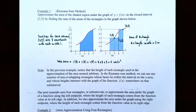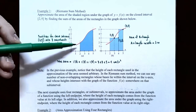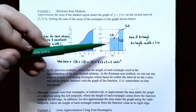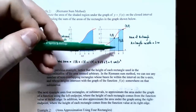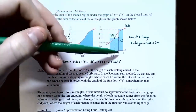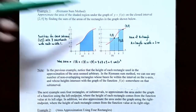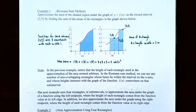Example 1 — the Riemann sum method: approximate the area of the shaded region under the graph y equals f of x on the closed interval 2 to 5 by finding the sum of the areas of the rectangles shown. We're going to use three rectangles: the first from x equals 2 to x equals 3, the second from x equals 3 to x equals 4, and the last from x equals 4 to x equals 5. The first rectangle has a height of 3, the second also has a height of 3, and the last rectangle has a height of 5. This is an approximation for the area under the curve.